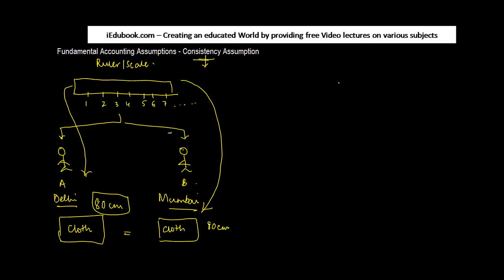Why? Because the 80 centimeters in this ruler is equal to the 80 centimeters in the ruler of B. The reason is that whatever area you're living in, if you get a scale, it is consistent in terms of measuring things.